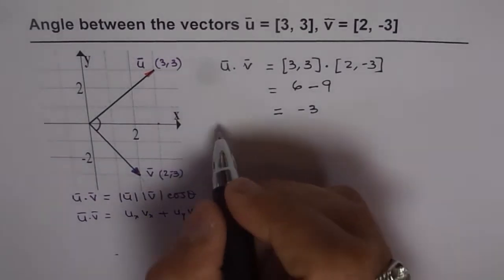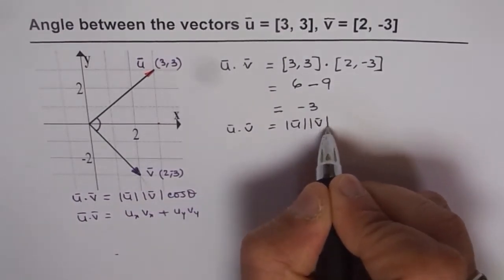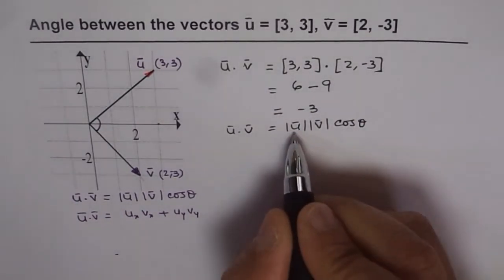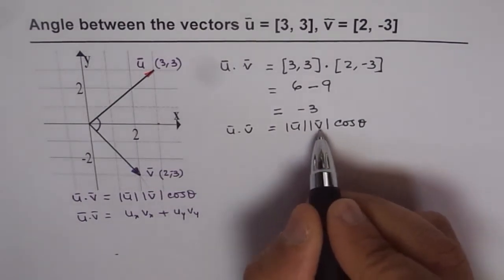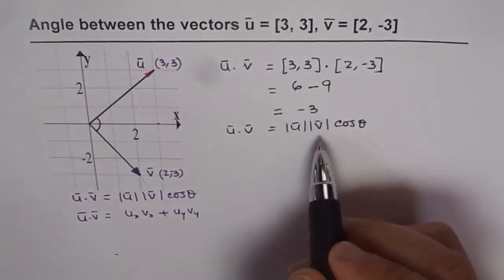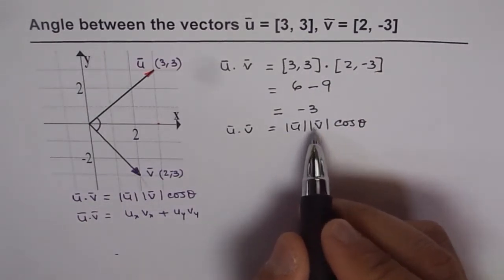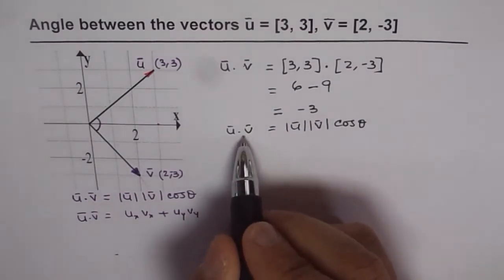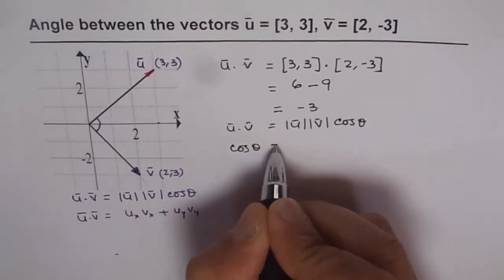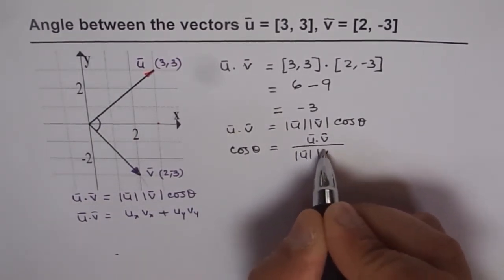We also know that u dot v equals magnitude of u times magnitude of v times cosine of theta. The magnitude of u is the square root of 3² plus 3², and the magnitude of v is the square root of 2² plus 3². We know u dot v is -3. So we can find cosine theta: cosine theta equals u dot v divided by magnitude of u times magnitude of v.